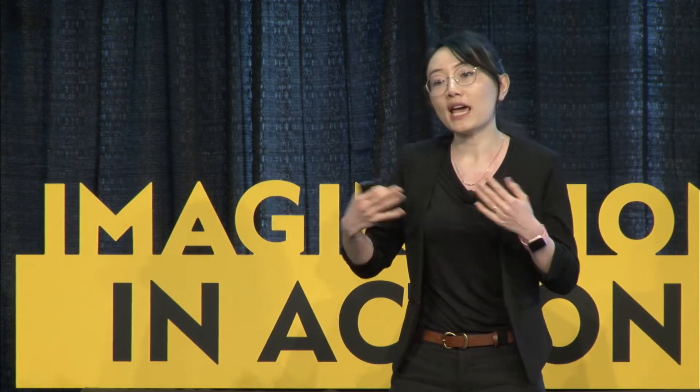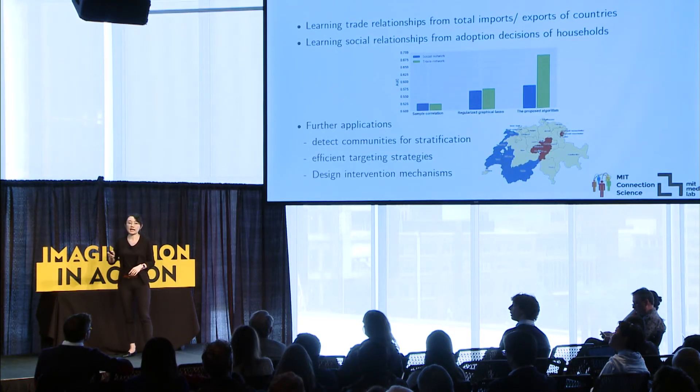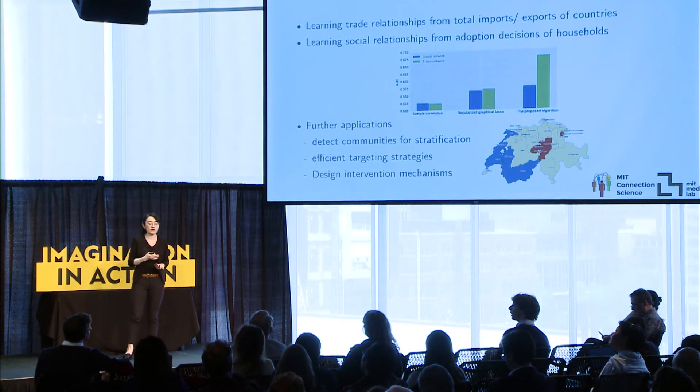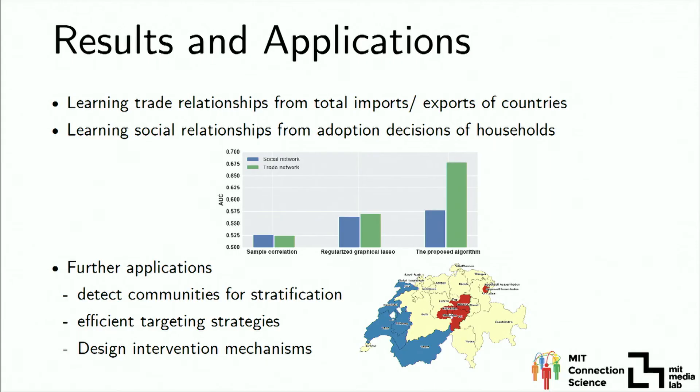There are different other applications you'll be able to do with our method. For example, you can detect communities by doing stratification or segmentation of your customers. We use referendum voting across different cantons in Switzerland to infer the underlying relationships among cantons and uncover political alliances — as you can see, different colors here represent different underlying communities. Second, you can design targeting strategies by identifying well-connected individuals to target for intervention or marketing campaigns. You can also design intervention strategies — for example, giving some individuals coupons so they adopt your product, and thereby their friends adopt it too, creating a ripple effect across the network.